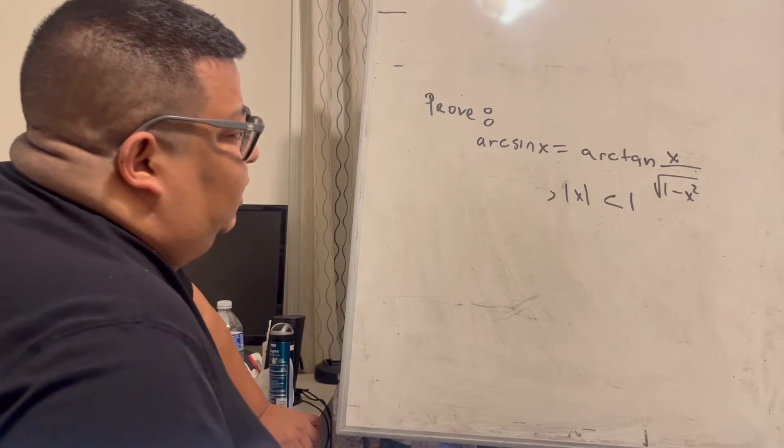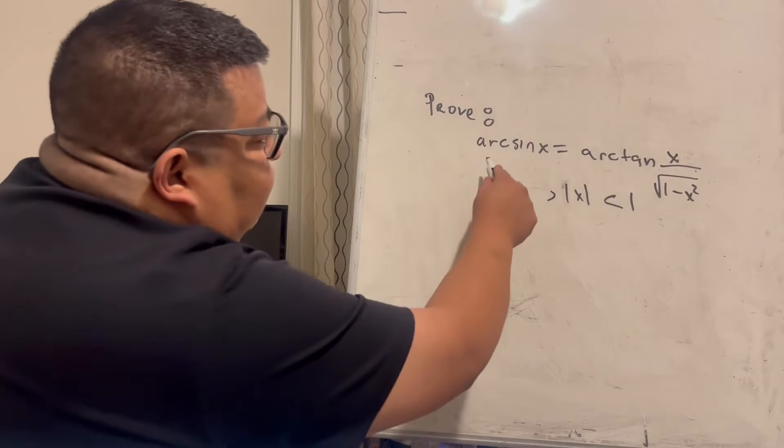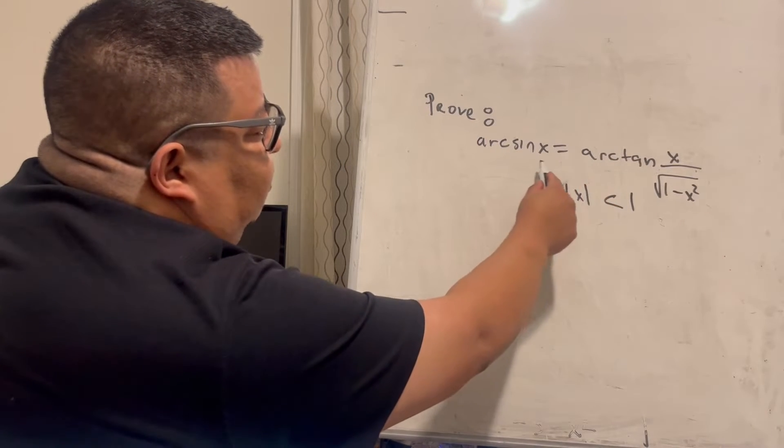The way that I'm going to work this out is like this: I'm going to take the tangent on both sides.